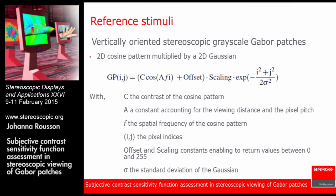For our experiments we had to add additional constants like A to account for the viewing distance and the pixel pitch, because when assessing the CSF we need the proper visual angle in terms of visual degrees. We need to properly calibrate everything in terms of viewing distance and pixel pitch. There were also constants like the offset and scaling used to obtain digital driving levels — numbers between 0 and 255 as required by the display, rather than values between 0 and 1.